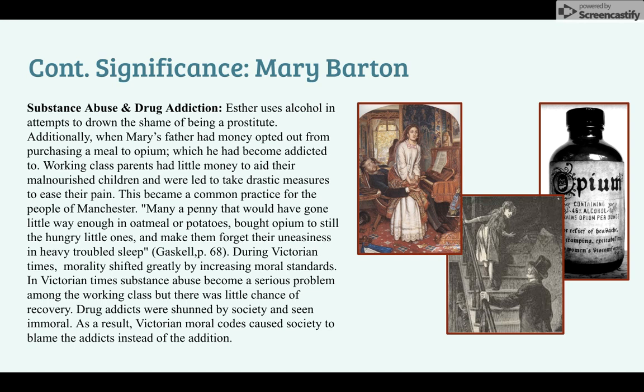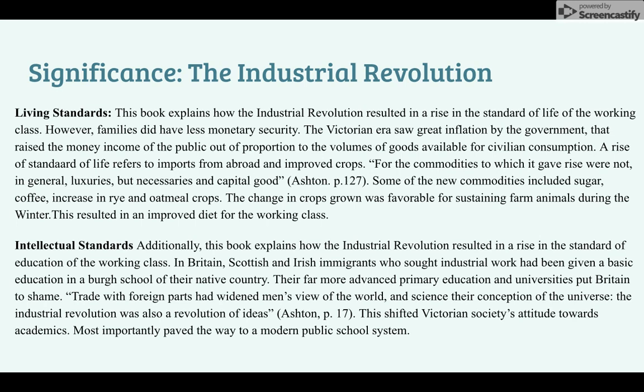Ashton's book explains how the Industrial Revolution resulted in the rise of the standard of living for working-class families. However, families did have less monetary value. The commodities that gave rise were not luxuries, but necessities and capital goods. Some of the new commodities included sugar, coffee, and an increase in rye and oatmeal crops. The change in crops was favorable for sustaining farm animals during the winter, resulting in an improved diet for the working class. Additionally, the book explains how the Industrial Revolution resulted in the rise of educational standards for the working class. Trade with foreign parts had widened men's view of the world and science their conception of the universe. The Industrial Revolution was also a revolution of ideas, shifting Victorian society's attitudes towards academics and paving the way to modern public school systems.